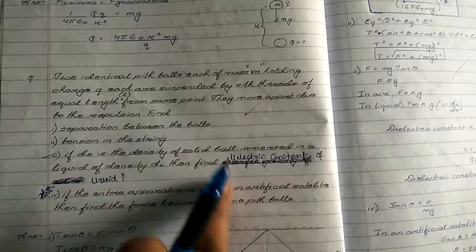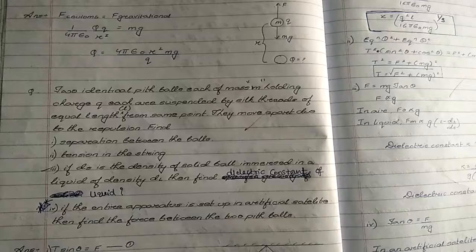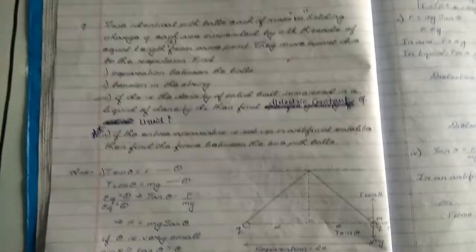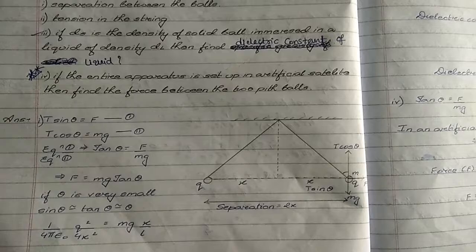If the entire apparatus setup is kept in the artificial satellite, then find the force between the two pit balls. So very carefully, draw the diagram like this. You can solve the question. Here I am showing only the answer. Just you can go through that answer. Solve it carefully, you will understand very easily.